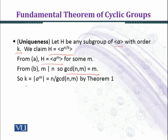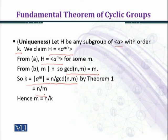So we get k equal to the order of a^m, which is n over gcd(n, m) by Theorem 1, which equals n over m, because gcd(n, m) equals m. Hence m equals n over k. In this way we have h equal to the cyclic group generated by a raised to the power n over k, and it is unique, as required.